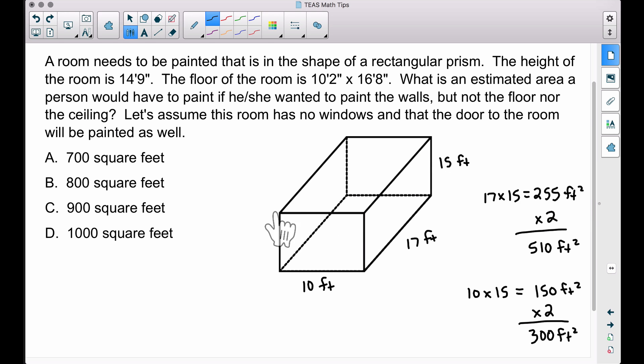The 510 square feet is the area of the two side walls, and the 300 square feet is the area of the front and back walls. That's all four walls. Let's find the sum: 510 plus 300 gives us roughly 810 square feet. 810 square feet is closer to 800 square feet than any of the other answer choices, so that's our solution.